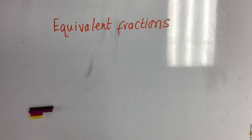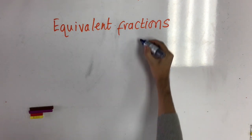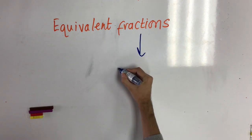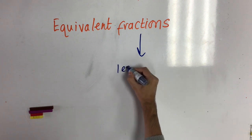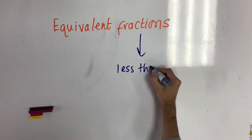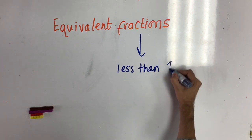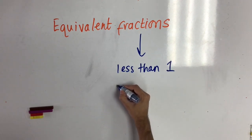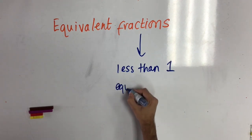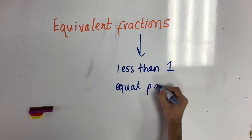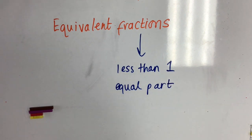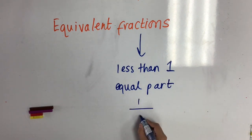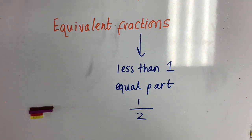In this video, we're going to talk about equivalent fractions. Before we start, let's remember that a fraction is a part less than one whole. For example, half is a fraction because it's two parts of one whole.